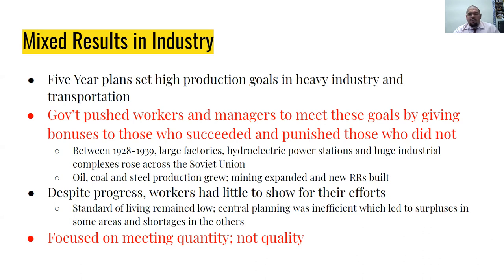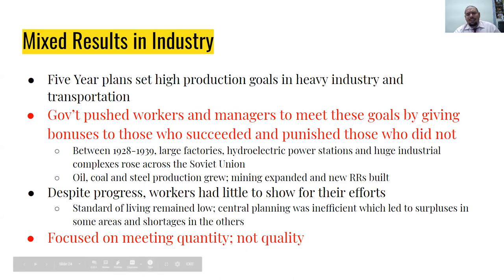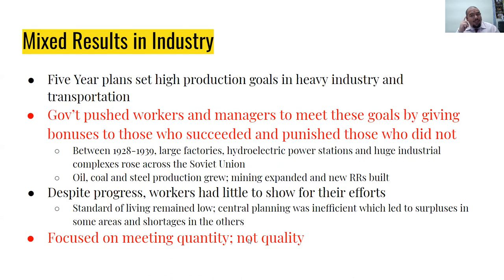Between 1928 and 1939, large factories, hydroelectric power stations, and huge industrial complexes rose all across the Soviet Union. Oil, coal, and steel production grew, mining expanded, and new railroads were built. However, despite all this progress, workers had little to show for their efforts. The standard of living remained low. Central planning was inefficient, which led to surpluses in some areas and shortages in others, and this focus on quantity not quality — for example, a shoemaking company that ran out of rubber for soles would still keep churning out shoes without soles to meet their quota.